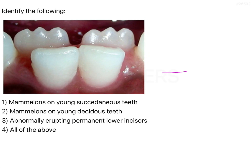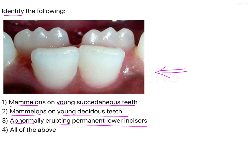In this question we have been given an image and we have been asked to identify correctly whether this image is depicting mamelons on young succidaneous teeth, mamelons on young deciduous teeth, abnormally erupting permanent lower incisors, or all of the above.